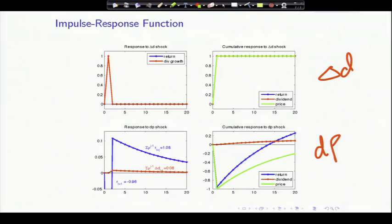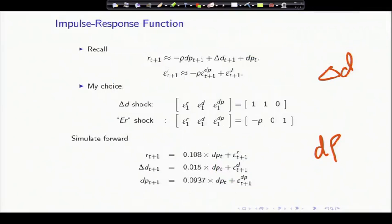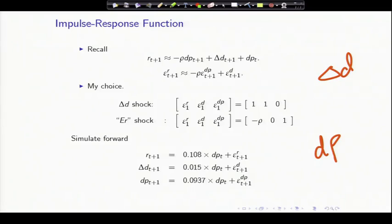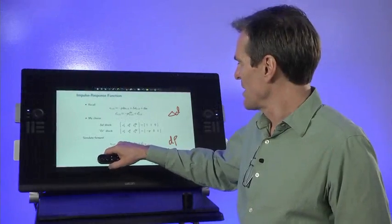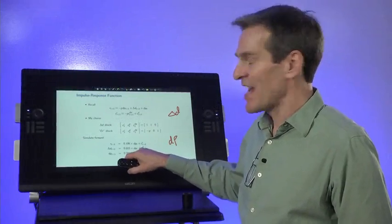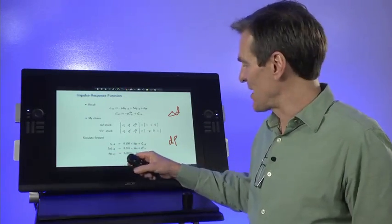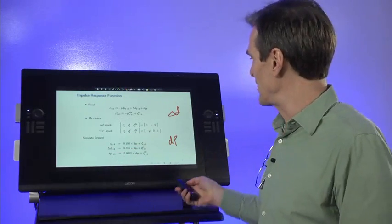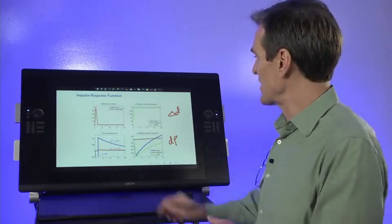So let's see that it makes sense. What happens when you hit this system with a dividend growth shock? Let me go back quickly. If we hit it with a dividend growth shock, if that goes up by one, then the return also goes up by one. But since the dividend yield is unchanged, nothing happens after that. So it's just going to be a one-period move, and then nothing happens. And you see that exactly.